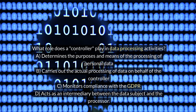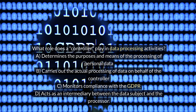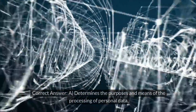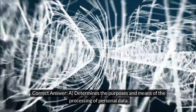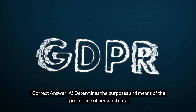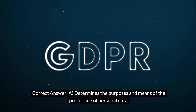What role does a controller play in data processing activities? A. Determines the purposes and means of the processing of personal data. B. Carries out the actual processing of data on behalf of the controller. C. Monitors compliance with the GDPR. D. Acts as an intermediary between the data subject and the processor. Correct answer: A. Determines the purposes and means of the processing of personal data.